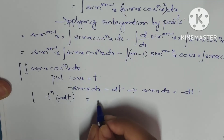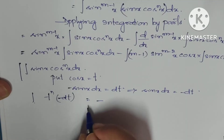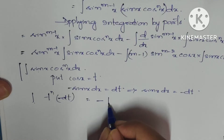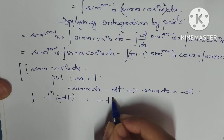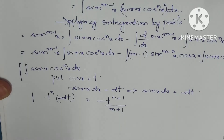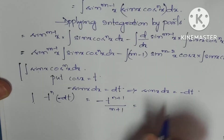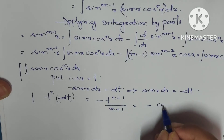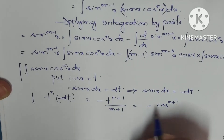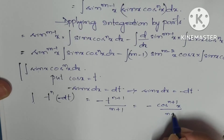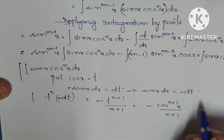Substituting, we get minus ∫t^n dt, which equals -t^(n+1)/(n+1). Substituting back for t, we get -cos^(n+1)(x)/(n+1).